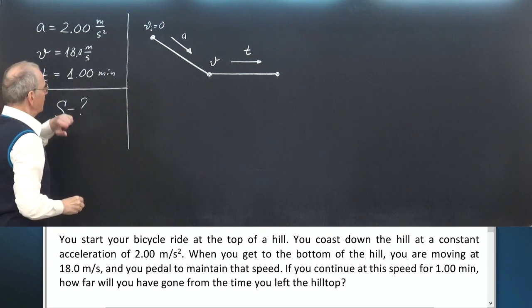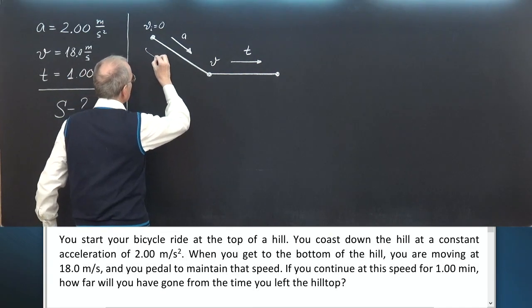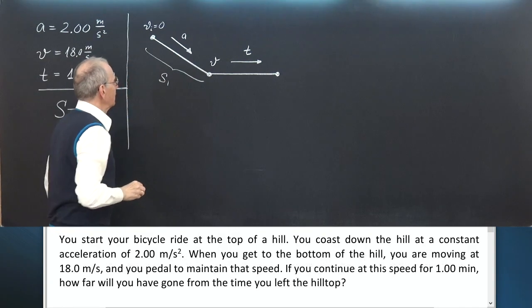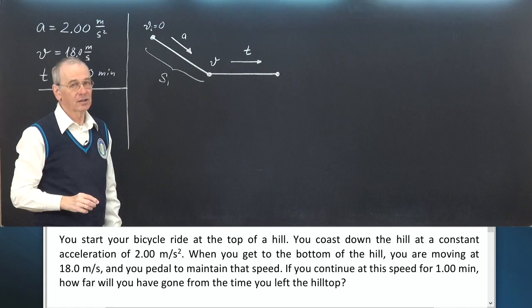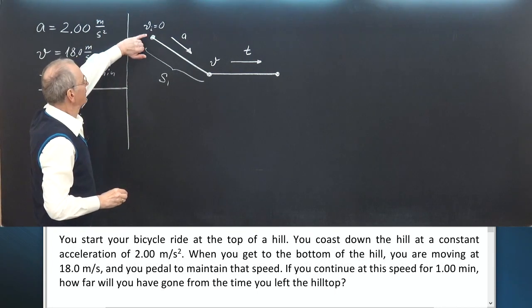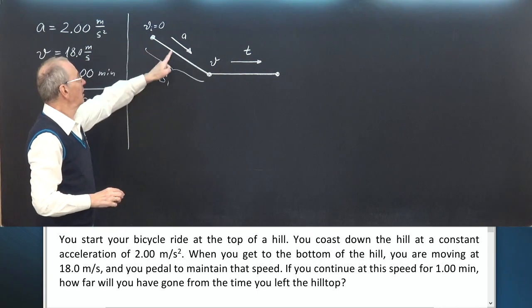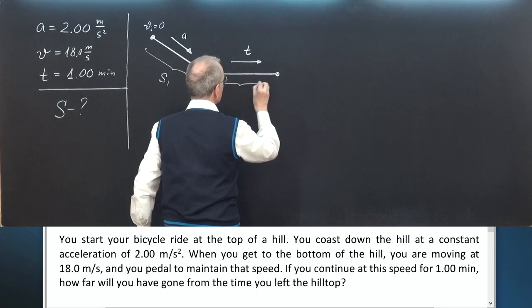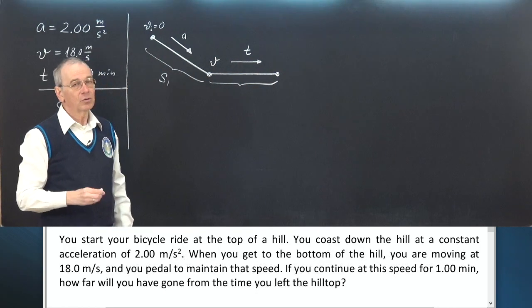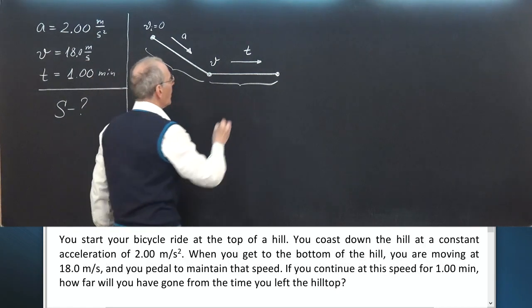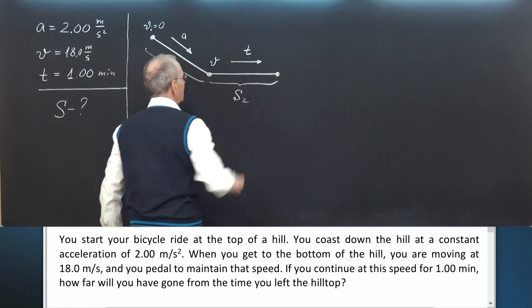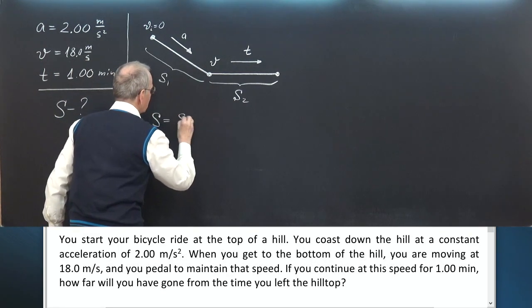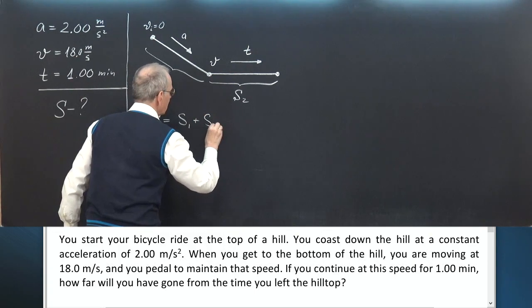The whole distance consists of two parts. The first part S1 is the part of uniformly accelerated motion from the state of rest at an acceleration A. The second part is uniform motion and distance is S2. So we can write S is S1 plus S2.